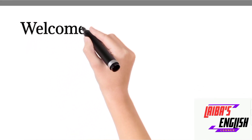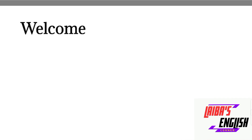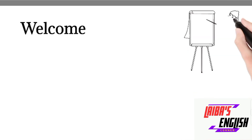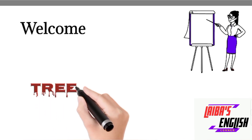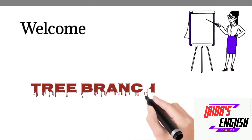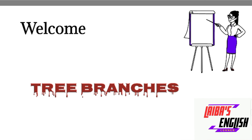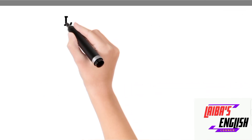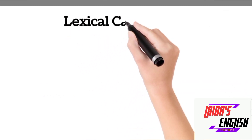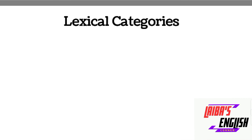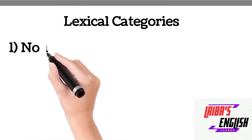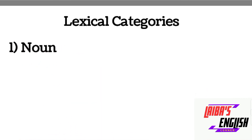Hello everyone and welcome to my YouTube channel Live as English Corner. In today's video we are going to start another interesting topic which is very important in grammar and syntax. Our today's topic is tree branches. We have learned the concept of how to categorize words — there are different ways of categorization, and syntactic function is the most important. Today we are going to see lexical categories and how many categories we can divide the word into, and what the process of dividing lexical categories is. We will start with the basics of tree structures.